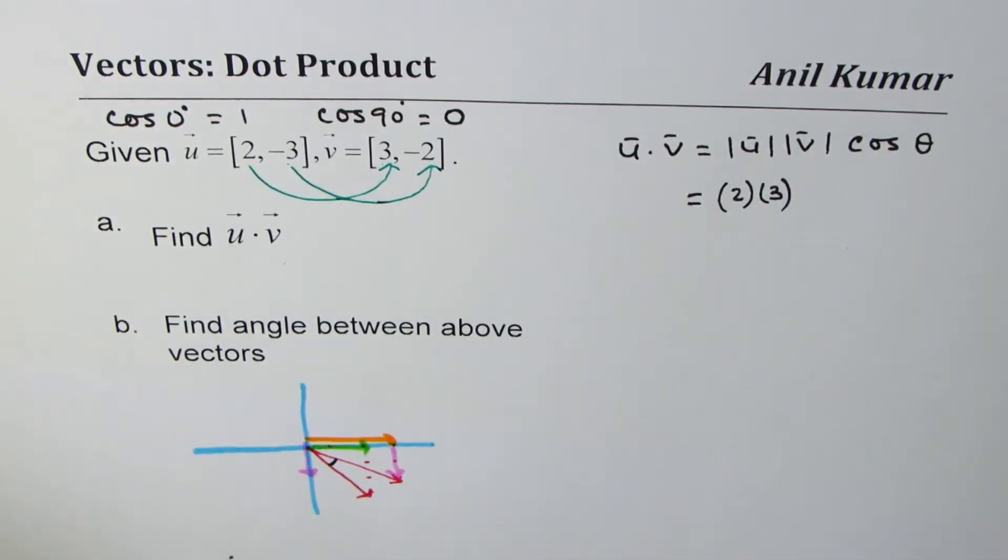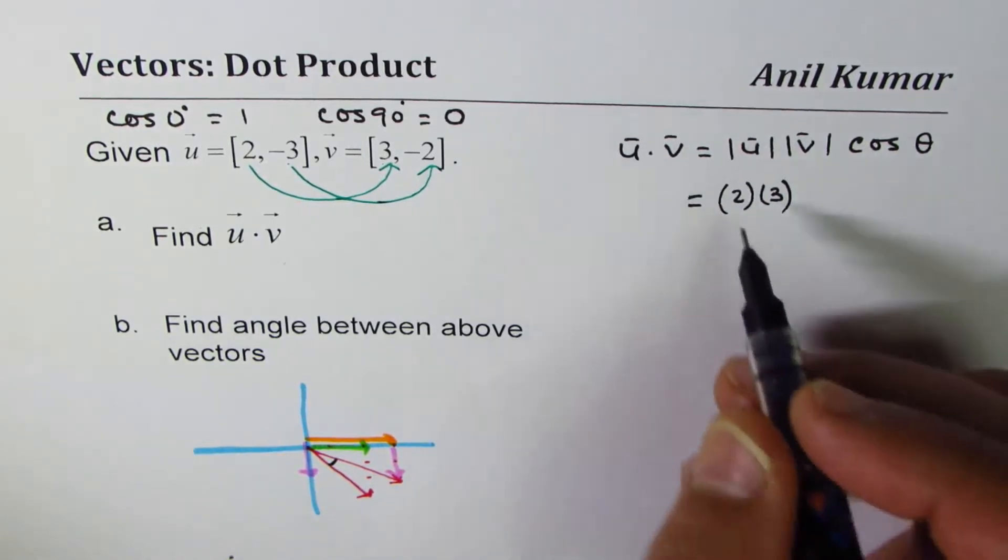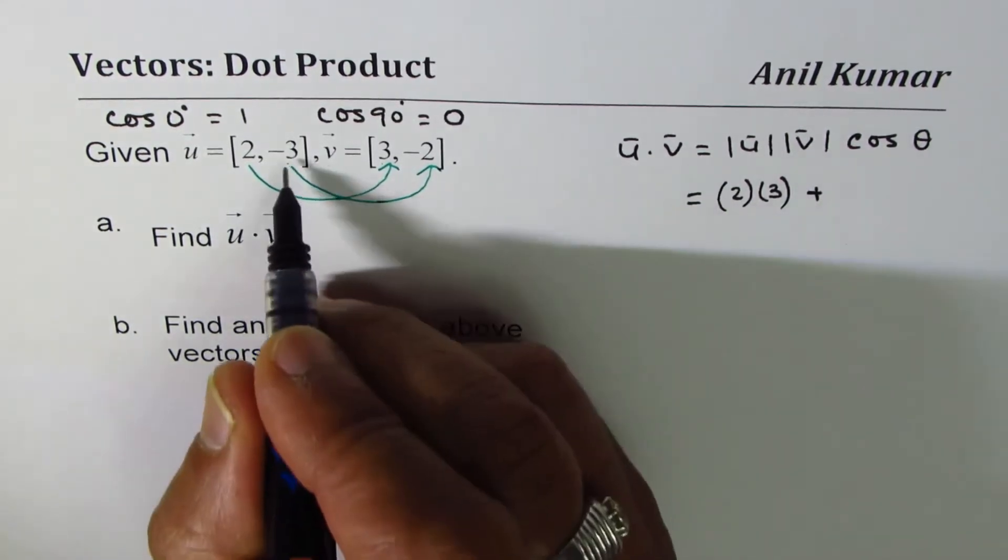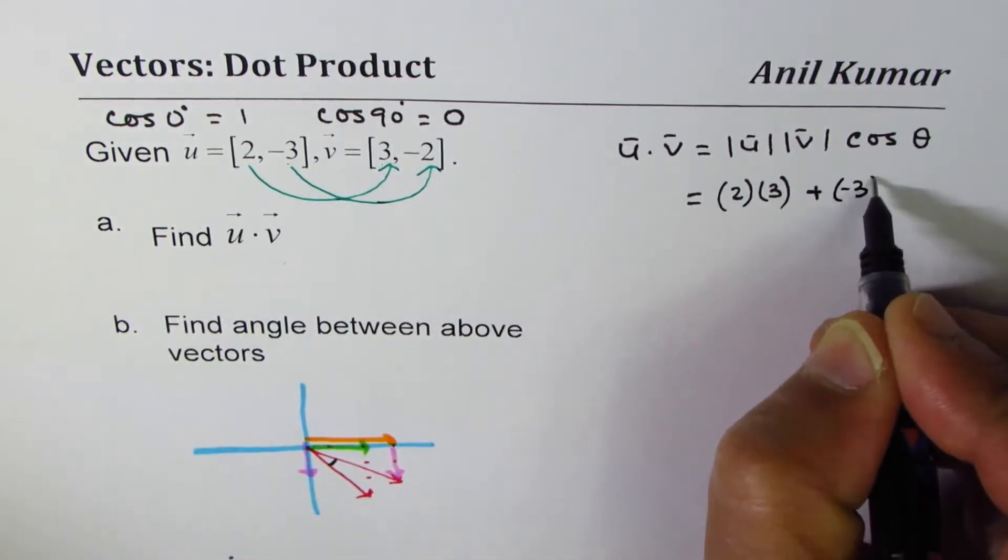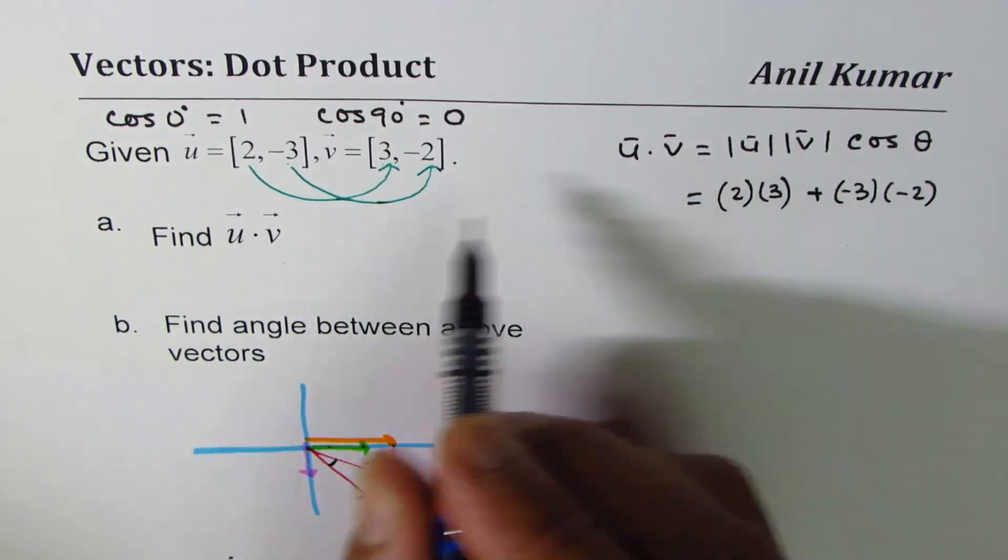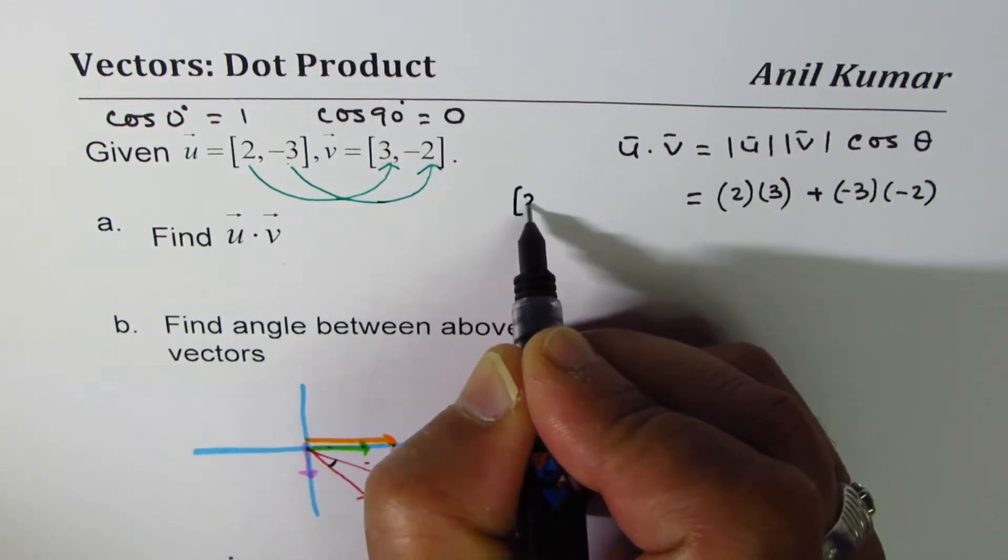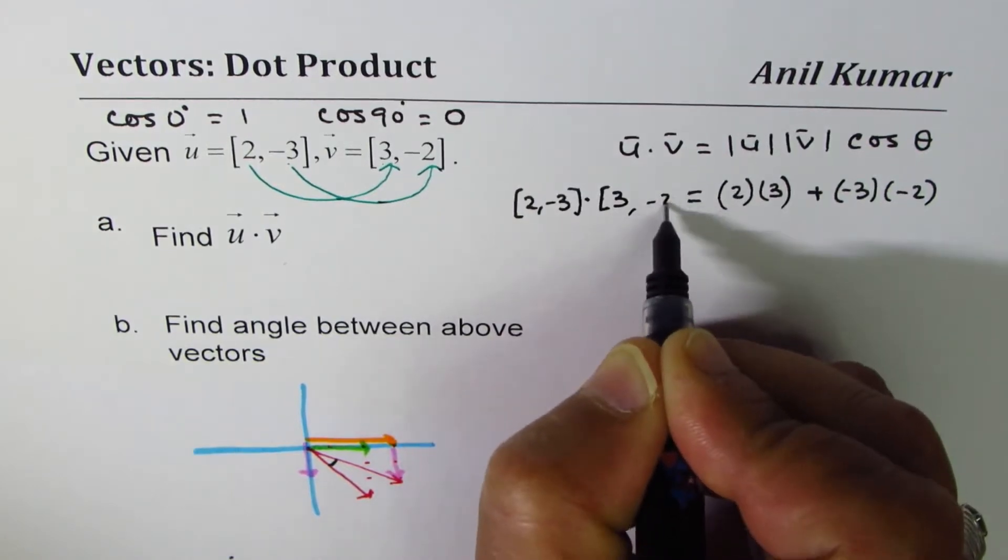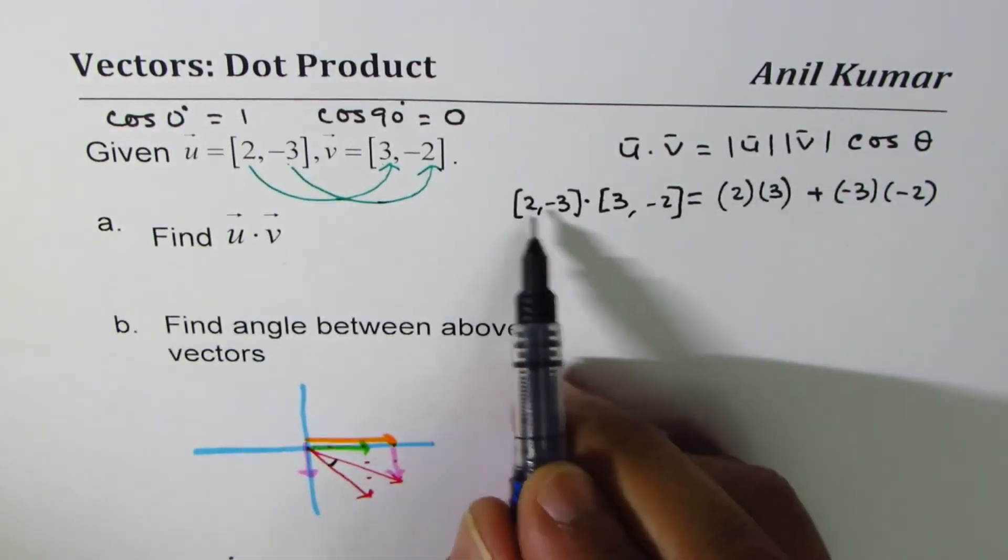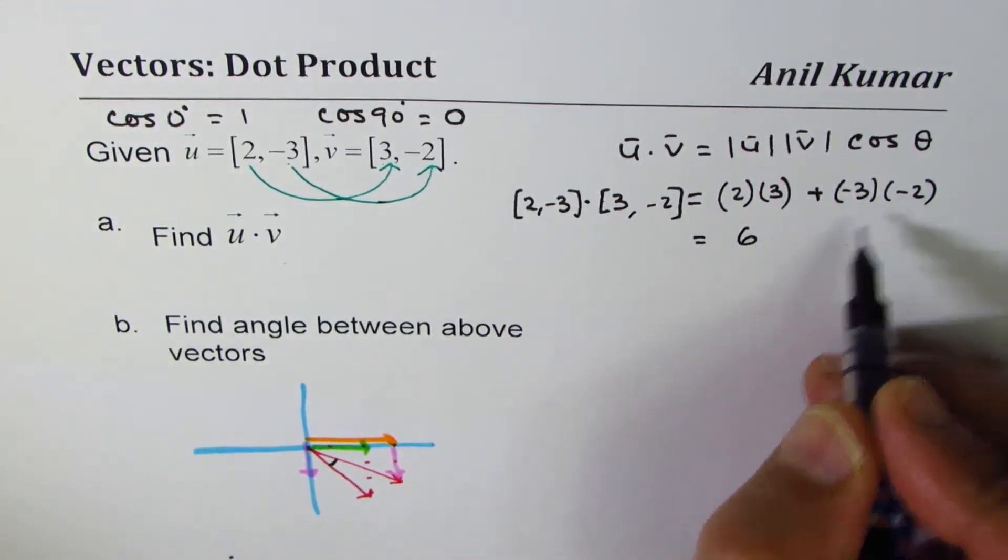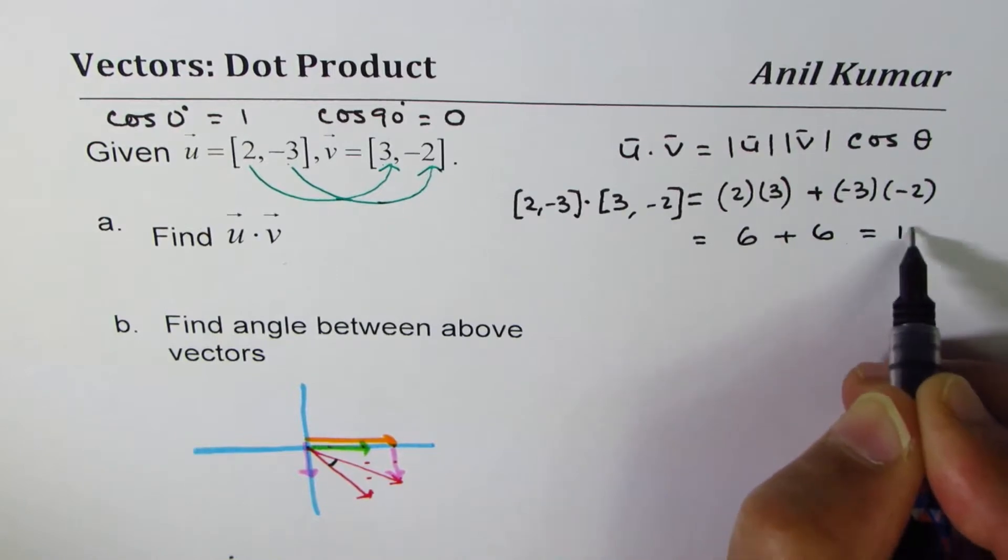So directly, whenever we do dot product, we normally prefer to just write 2 times 3, that is multiply their x components and then add product of their y components, because they are in the same direction. Multiplying y component with x component results in cos of 90 degrees which is zero. That's why dot product is so simple to use. So we get 2 times 3 and then we get plus of -3 times -2. You get an idea. So we could write dot product like this: [2, -3] dot [3, -2]. Multiply 2 and 3, and then this, you get 6 minus minus is plus 6, which is equal to 12.